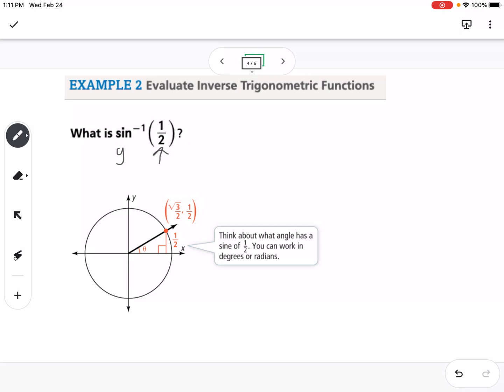And again, remember we've restricted the domain, so with sine we're thinking just on the right side of our unit circle. So in order for us to have, so on the right side of our unit circle, there's only one y value that's positive one-half, and that would be this point right here, which corresponds to an angle of 30 degrees or pi over 6 radians.